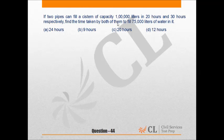From the first statement, the first pipe takes 20 hours and the second pipe takes 30 hours to fill 1,00,000 liters. This means we can say that the efficiency of pipe 1 and pipe 2 is in the ratio 3:2.